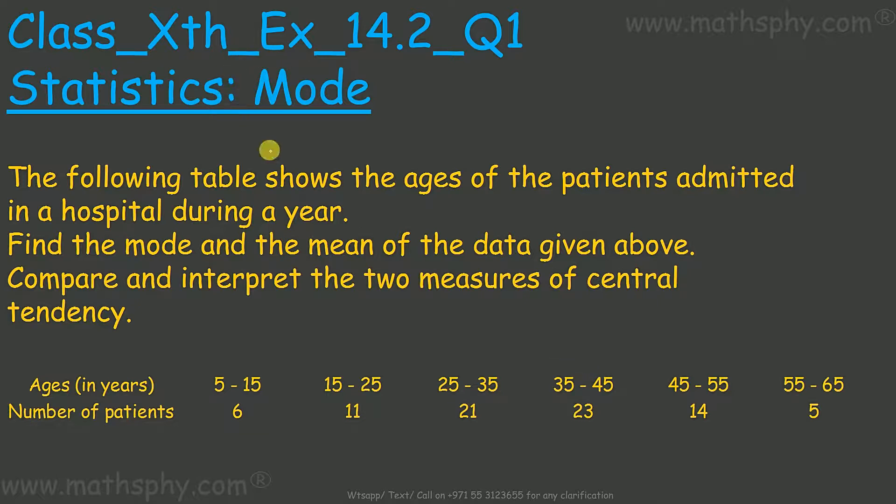Now we already know what mode means - the number which occurs most of the time. In this data we have been given age of the patients and number of patients. We have to find out the mode, which means we have to find out patients of which age has been admitted maximum number of times in the hospital in a year.